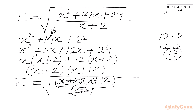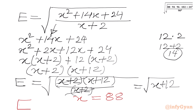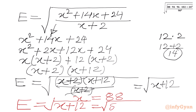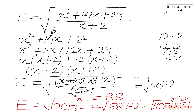After cancellation we get expression e equal to square root of x plus 12. Since x equals 88, we have x plus 12 equal to 100. This gives us square root of 100, which we can write as square root of 10 squared. The square root and square cancel, giving our final answer: 10.